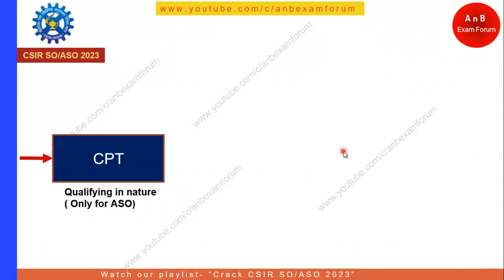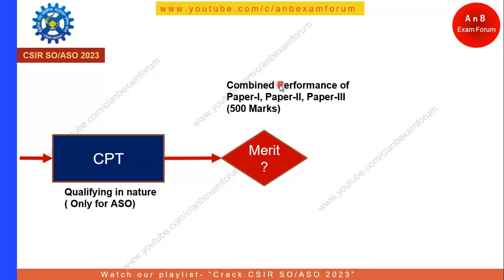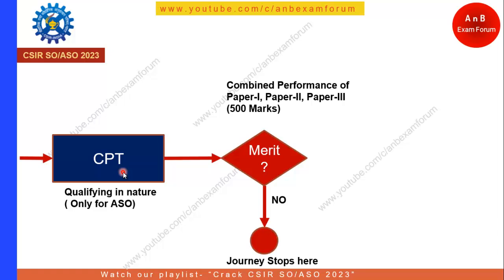For ASO — Assistant Section Officer — there will be a Computer Proficiency Test, which will be qualifying in nature. And again there will be a merit, but this time it will be only the combined performance of Paper 1, Paper 2, and Paper 3 — which is 500 marks. CPT is not included in the merit because it is qualifying in nature. If the candidate is able to come under merit, they reach their destination; otherwise, their journey stops here.